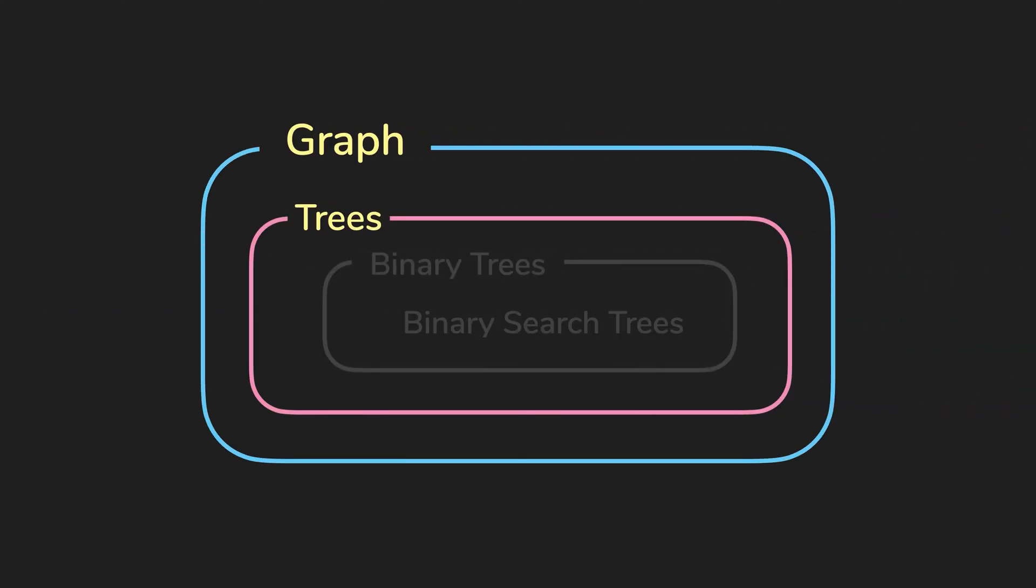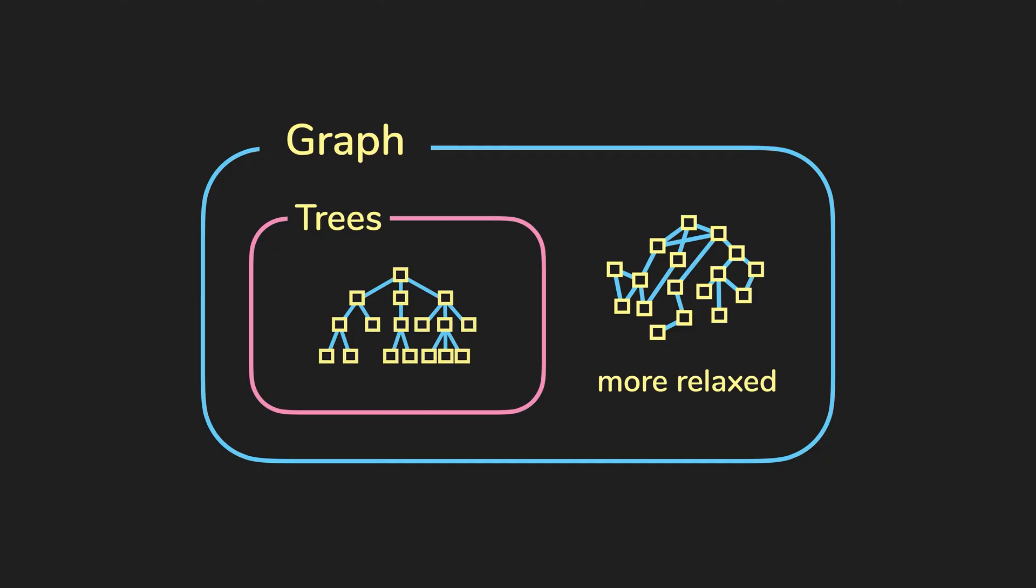Previously, we talked about how trees are actually a subset of graphs. So the definition of a graph is actually more relaxed than a tree.